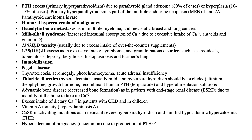Inactivating mutations in the calcium-sensing receptor: if homozygous, you get neonatal severe hyperparathyroidism — relevant for pediatric nephrologists and endocrinologists. For internists, nephrologists, and adult endocrinologists, the key is familial hypocalciuric hypercalcemia, and differentiating it from primary hyperparathyroidism. Last but not least, hypercalcemia of pregnancy — not common — is due to production of PTHRP. I'm going to end here, and in the next lecture we will continue our discussion of hypercalcemia. See you then.